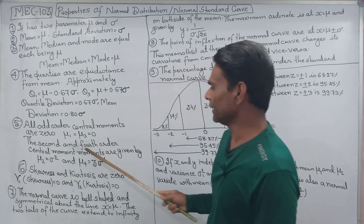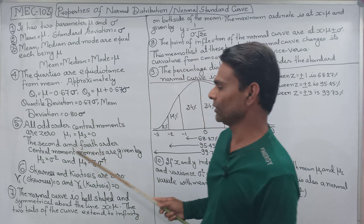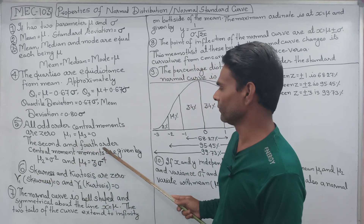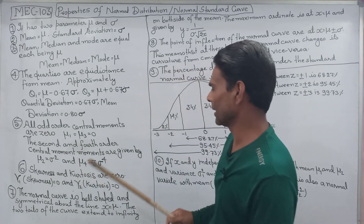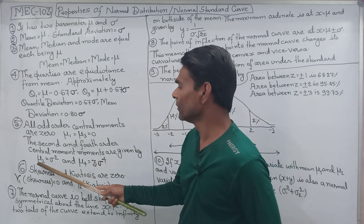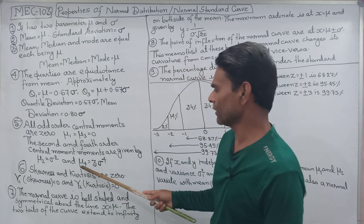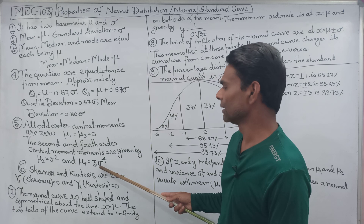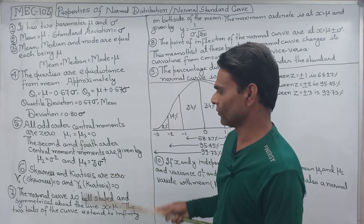The second and fourth order central moments — the even order central moments — are given as: mu2 = sigma squared, and mu4 = 3 sigma to the power 4.